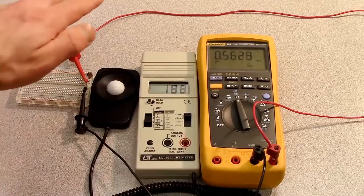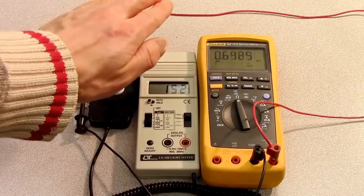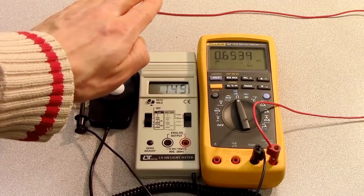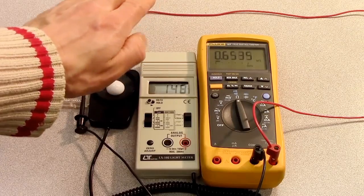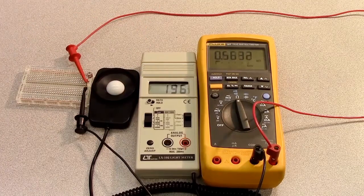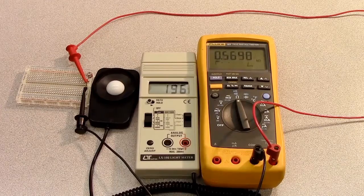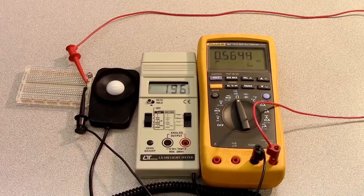Notice as I shade the lux meter and the LDR, the lux goes down and the resistance goes up. Shine light on it a little brighter and the resistance goes down and the lux goes up.